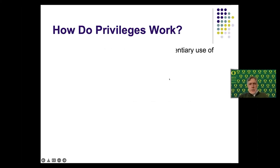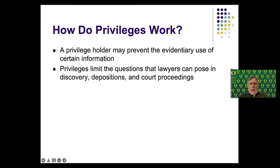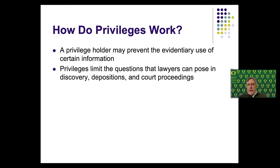How do privileges work? A privilege holder may invoke the privilege — it doesn't operate automatically — but a privilege holder may assert the privilege to bar the use of certain information in evidence. It doesn't foreclose any use of the information, which is part of the reason why we have this parallel world of ethical limitations on attorneys and judges. But really what a privilege does is bar the use in court or in discovery — depositions, requests for admissions, things like that — and it basically limits what lawyers can obtain.